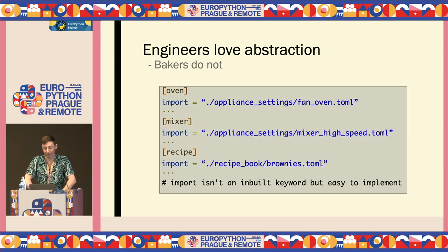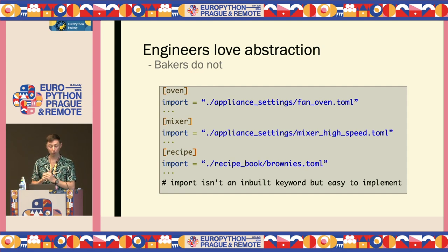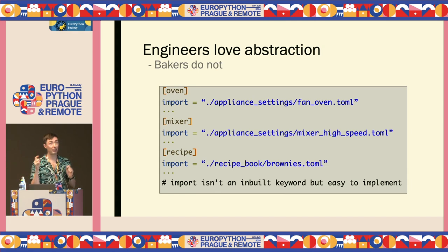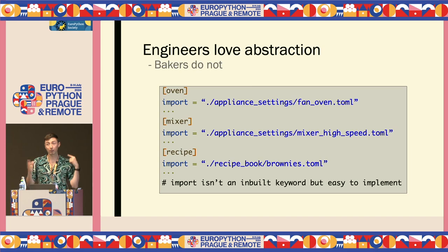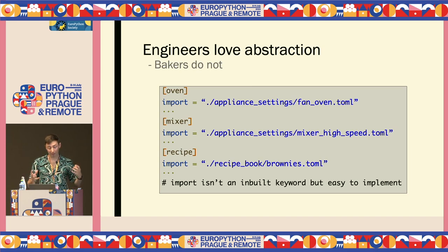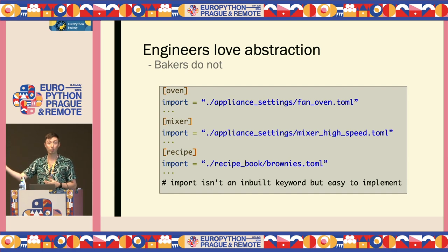You've fully decided to compartmentalize this code. For instance, you have your oven settings which might import from another config file, your mixer might import from something else, your recipe might import from somewhere else. Just a caveat — 'import' is not a built-in keyword in TOML, you would have to implement it yourself. If you update, say, settings for fan oven, it will then change every single recipe that has a fan oven, which is usually what you want — because engineers love abstraction and hate redundancy.